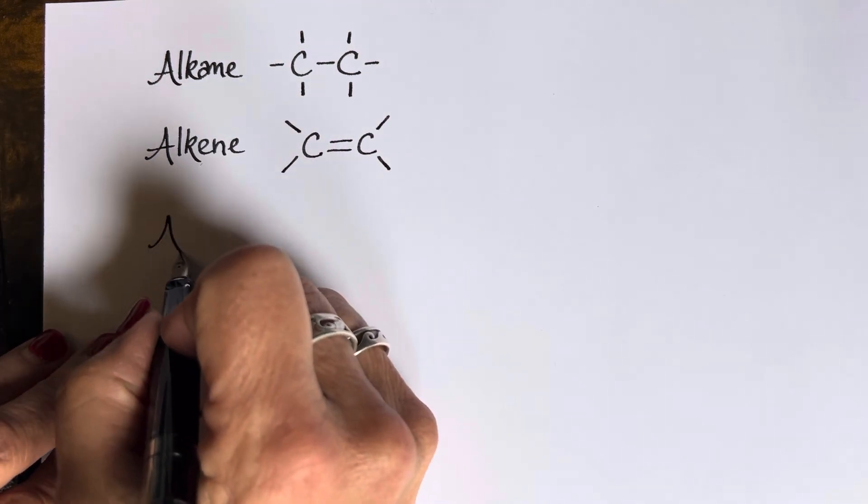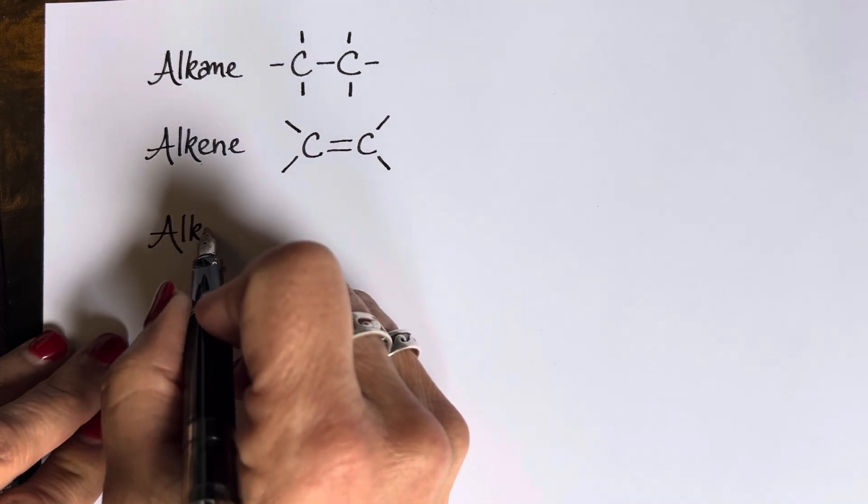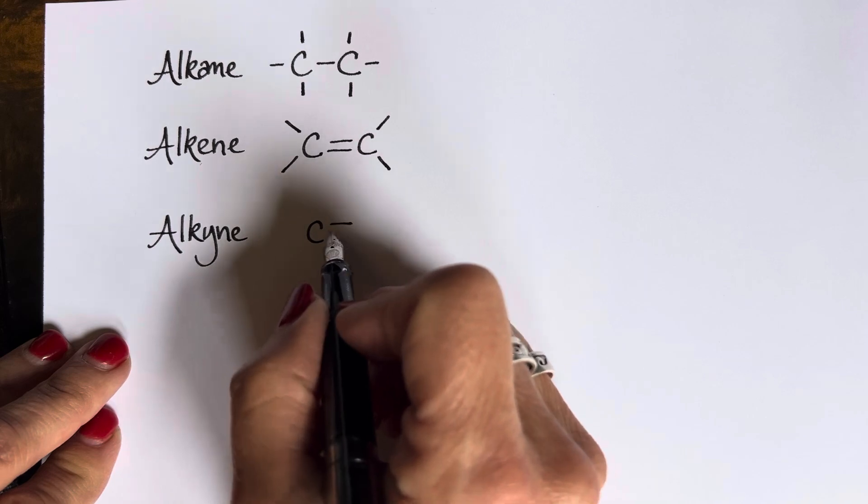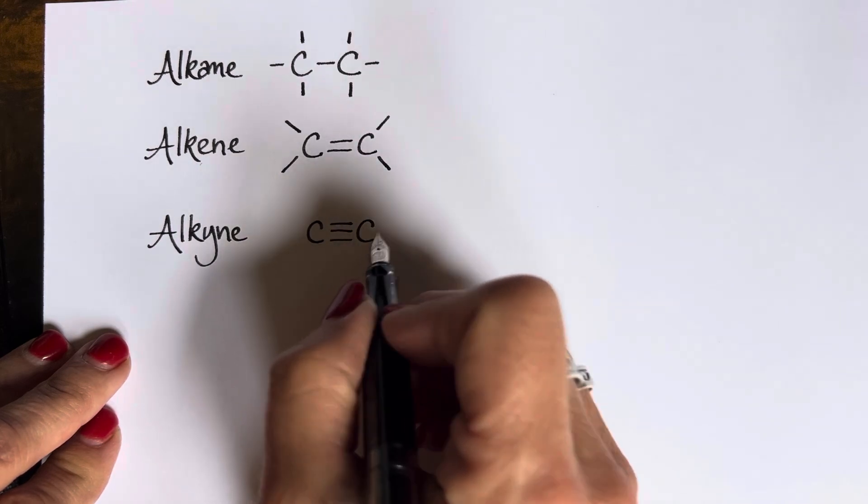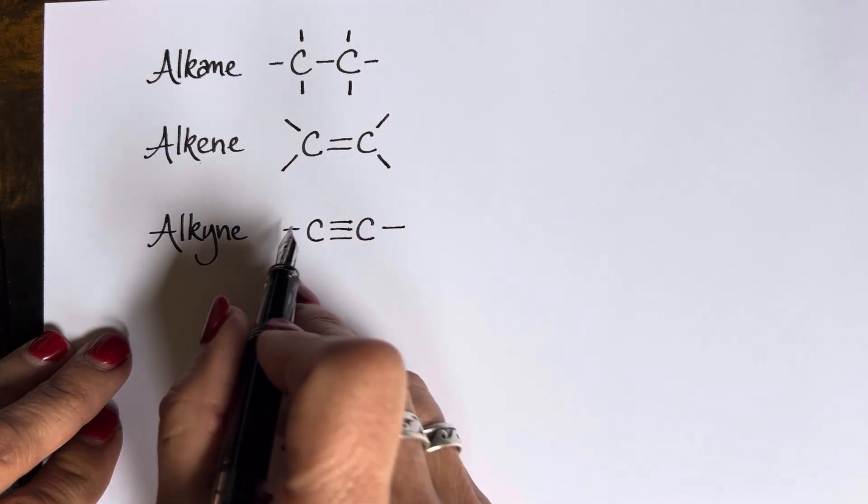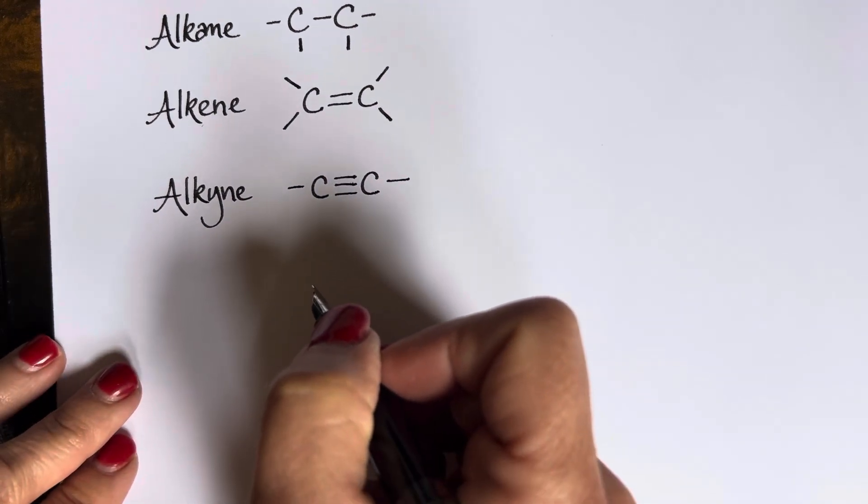Then we have an alkyne. Alkyne has a triple bond. And once again, to maintain the octet, we can only have single bonds to those carbons.